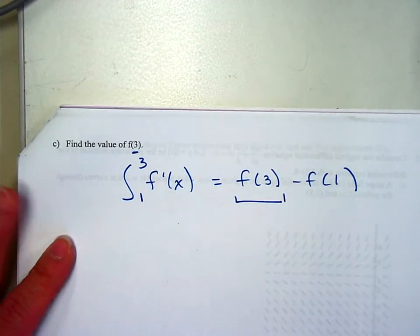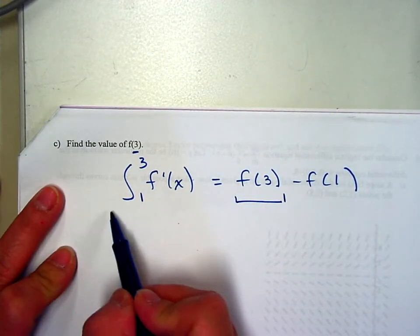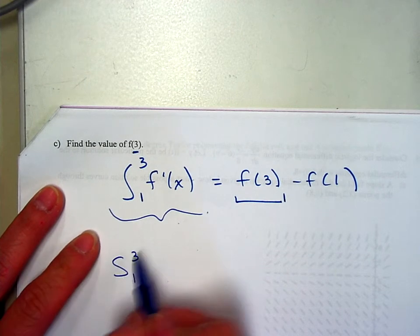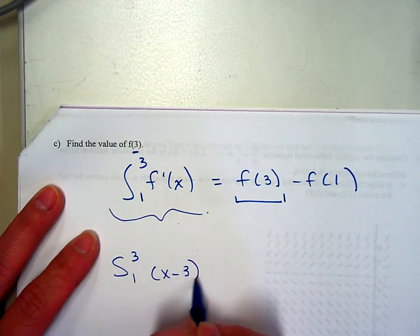So step 1, let's figure out how to integrate this. 1 to 3, f prime is x minus 3 times e to the x dx.